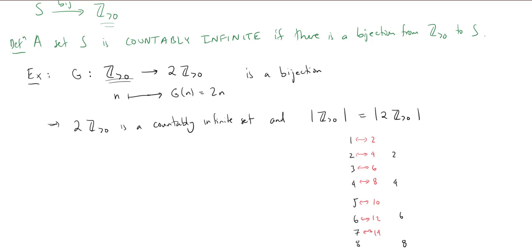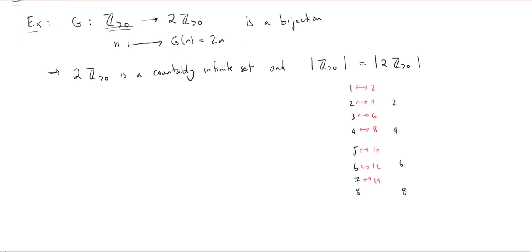Our next example is actually going to be a theorem, and it's maybe a little more surprising. What if we replace the even positives with a set that seems a lot bigger than the integers — like say the set of all fractions, the rational numbers? Certainly you shouldn't be able to build a bijection between them. But amazingly, Q is countable. This is very, very surprising.